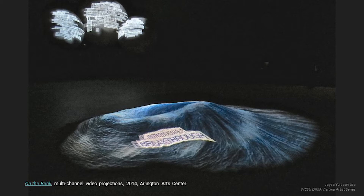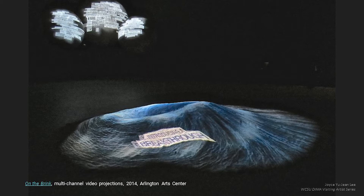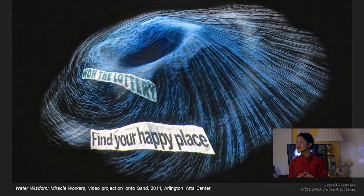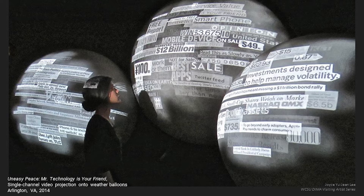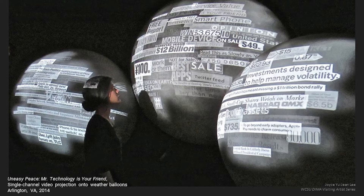Here is another installation that continued by playing with sand — two pieces where one is a giant pile of sand with a hole in the middle, and I created a swirling vortex with text I was clipping from magazines and newspapers. This piece was called Water Wisdom Miracle Workers, and the words kind of swirl around and go down the hole. And here we have three giant weather balloons — ranging from three to six feet in diameter — with words extracted from newspaper headlines, scanned in and digitally collaged, hovering like a virtual cloud.